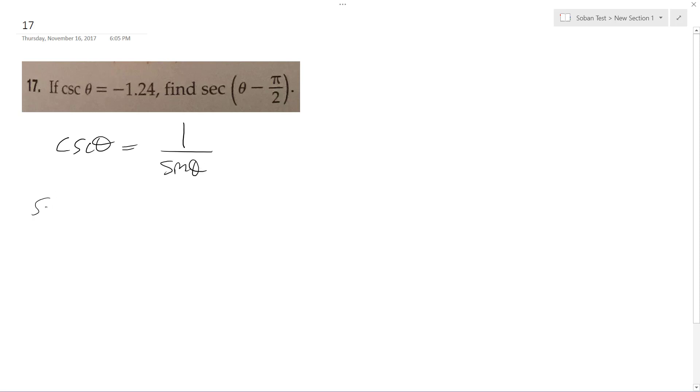So with secant, secant theta of—let me get this right—this is a difference formula, so I'm going to get the secant as the same thing as 1 over cosine of theta minus pi over 2.